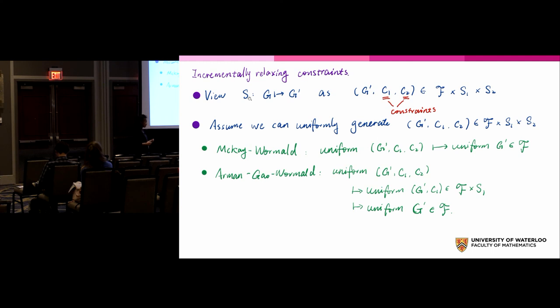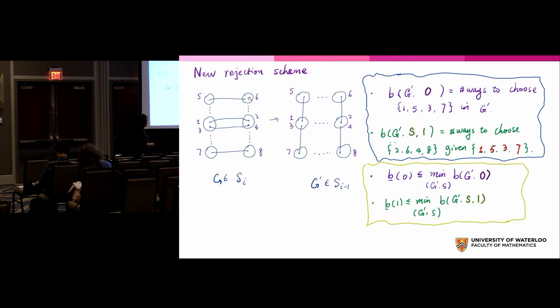What McKay-Wormald's algorithm does from this perspective is that once you can generate those objects uniformly, they try to generate an unconstrained g prime uniformly by counting how many ways I can put those constraints simultaneously. What we do differently in this paper is we relax those constraints one at a time, not simultaneously. That significantly reduces the computation time.